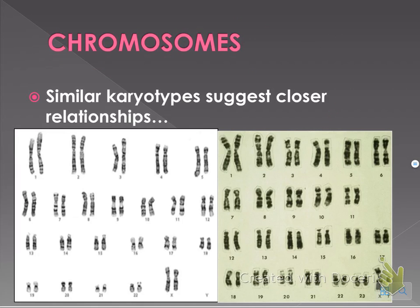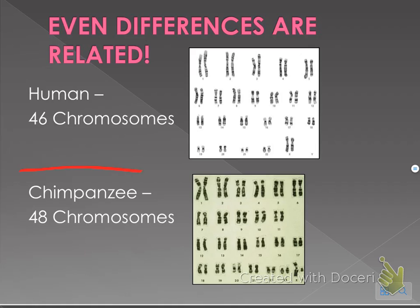Chromosomes are huge for classification. Karyotypes suggest closer relationships — when organisms have similar karyotypes, they are more closely related. For example, humans have 46 chromosomes and chimpanzees have 48. The only difference is an extra set of chromosomes for chimps versus humans; otherwise they look pretty close to each other.